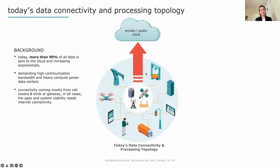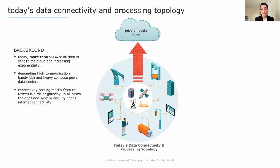To start, let's review the current status of data connectivity and processing. Today, the way applications are architected on all these connected end nodes — and by edge, I'm referring to all these devices that are running applications and generating data — the majority of this data, over 90% of it, is going through a combination of public and private cloud to get processed, stored, and streamed amongst various devices and systems. With the increasing amount of data generated from these edge devices, there is an increasing demand for high bandwidth and heavy compute power by adding servers in data centers.